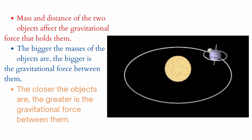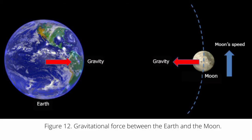Mass and distance of the two objects affect the gravitational force that holds them. The bigger the masses of the objects are, the bigger is the gravitational force between them. The closer the objects are, the greater is the gravitational force between them. The figure below illustrates gravitational force between the Earth and the Moon. Earth has bigger gravitational force over the Moon.